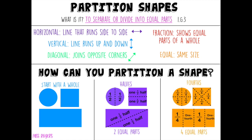And last but not least we have fourths. You might hear the word four in fourths. And that is because when an object is split into fourths it has four equal parts. As you can see, the circle, the square and the rectangle are all split into fourths in different ways.